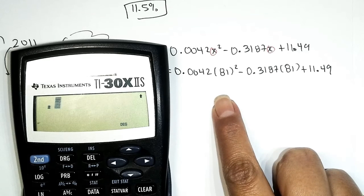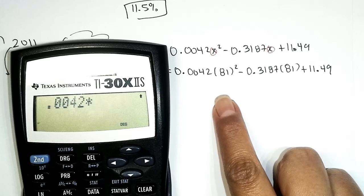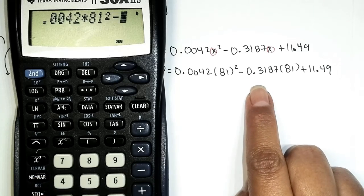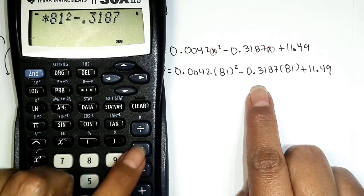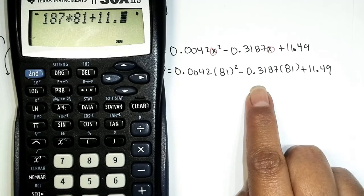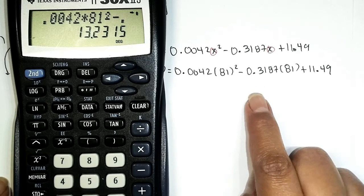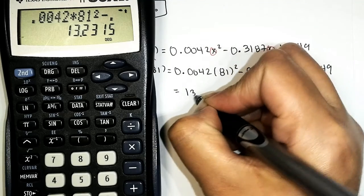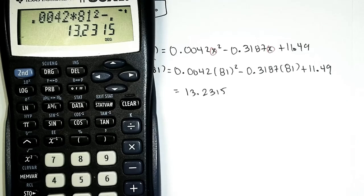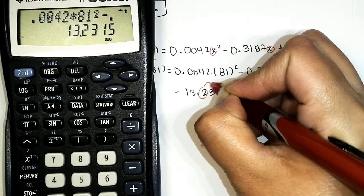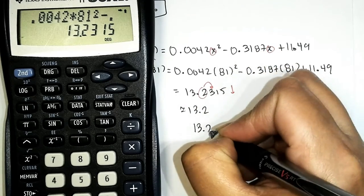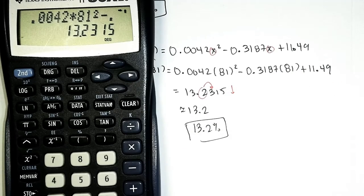We have 0.0042 times 81 squared, minus 0.3187 times 81, plus 11.49. We enter that into the calculator — 0.0042 times 81 squared, minus 0.3187 times 81, then add 11.49. This gives us 13.2315. We round to the nearest tenth: the digit in the tenths place is 2, we look next door and round down, giving us 13.2. So the percent of the US population that was foreign born in 2011 is approximately 13.2 percent.